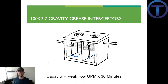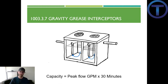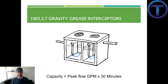Section 1003.3.7 gives us a formula for capacity. If we're trying to figure out the capacity of a grease interceptor, we take the peak flow rate in gallons per minute, multiply that by 30 minutes, and that gives us an idea of what the capacity would need to be.